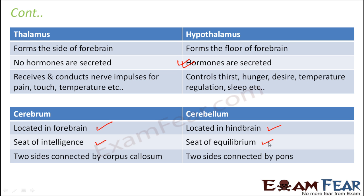In cerebrum, if you look at its structure, it is divided into two cerebral hemispheres which are connected by a strip of nerve fibers called corpus callosum. Whereas in cerebellum, the two sides are connected by pons. Pons is another part of the hindbrain.